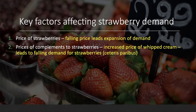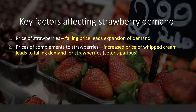Another key factor is the price of complements to strawberries. For example, if the price of whipped cream goes up — whipped cream being something people tend to buy together with strawberries — then people will probably buy less whipped cream and possibly also reduce their demand for strawberries. Ceteris paribus, all other factors held constant, the price of a complement goes up and the demand for strawberries goes down, and vice versa.